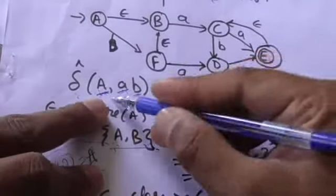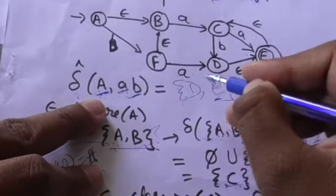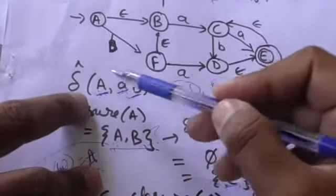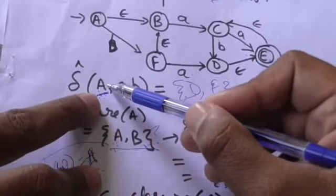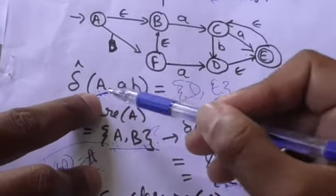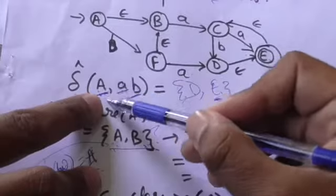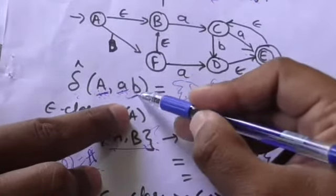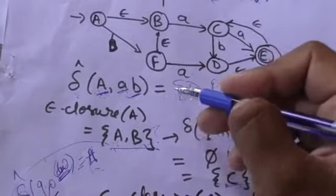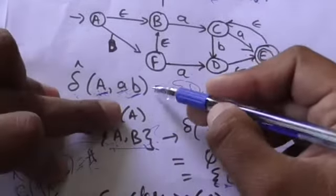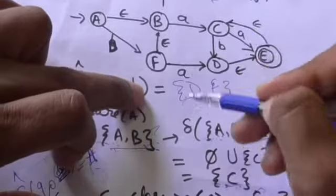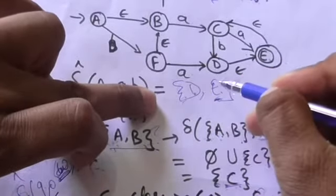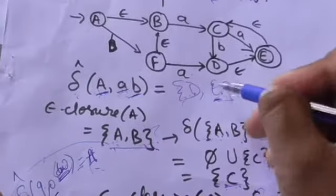So the output of this extended transition function will be a set having two states: d and e. This means when the machine is in present state a and reads the string 'ab', the set of possible states in which this NFA with empty transitions can be is {d, e}.